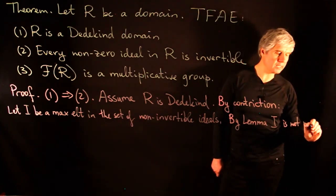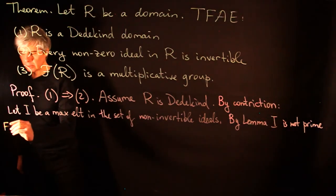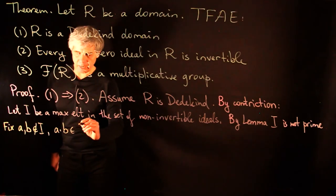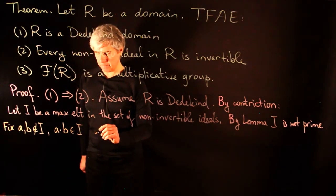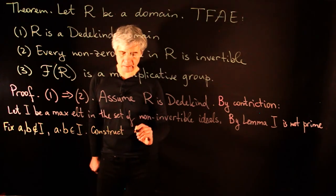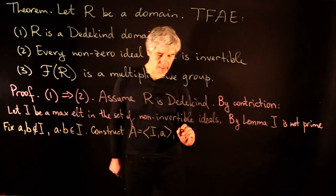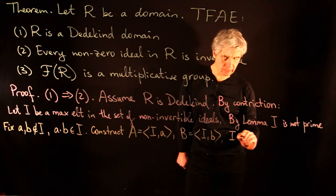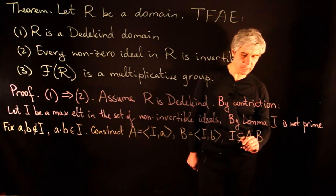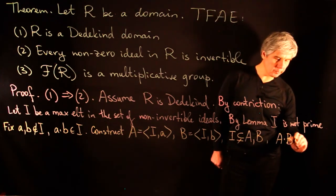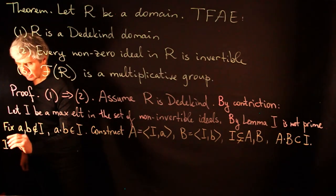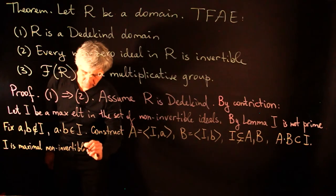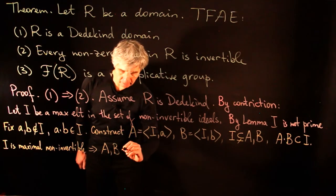Fix two elements a and b not in I with a·b ∈ I — possible because I is not prime. Construct ideals A = (I, a) and B = (I, b). Then I is strictly contained in each of A and B, and A·B ⊆ I. Since I was a maximal non-invertible ideal, both A and B are invertible.